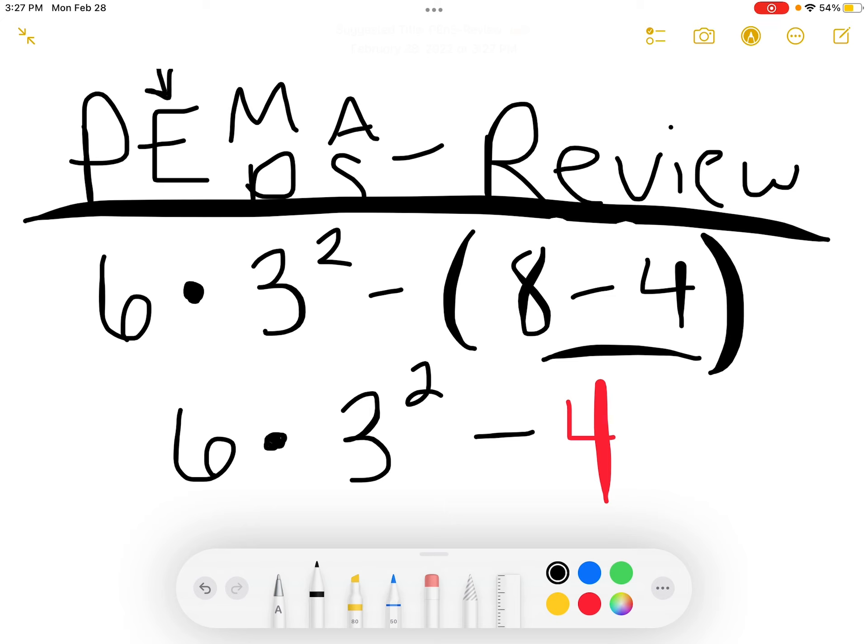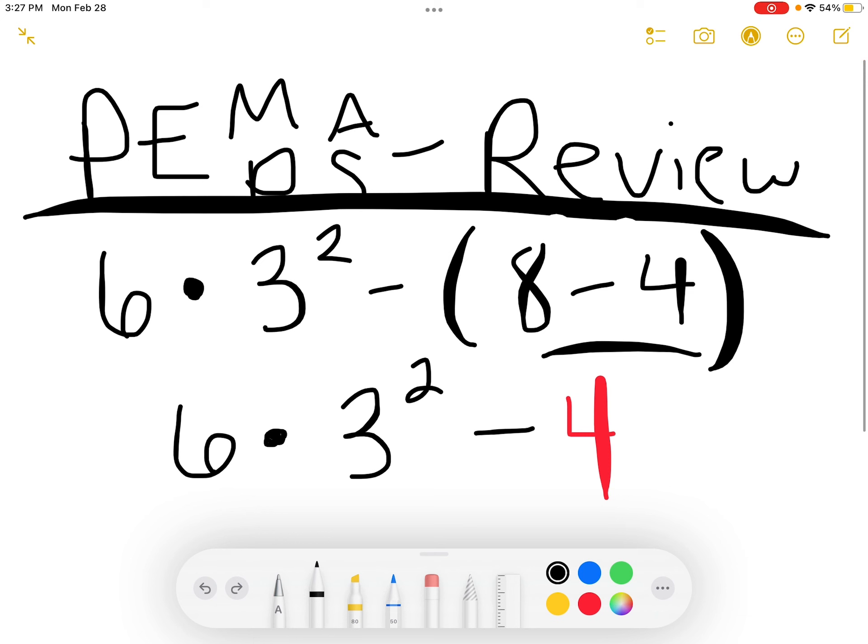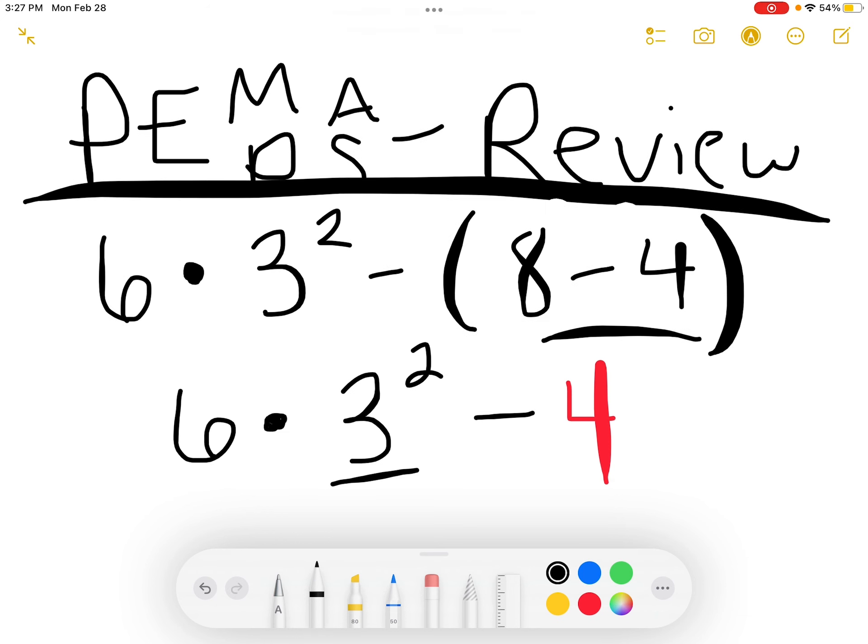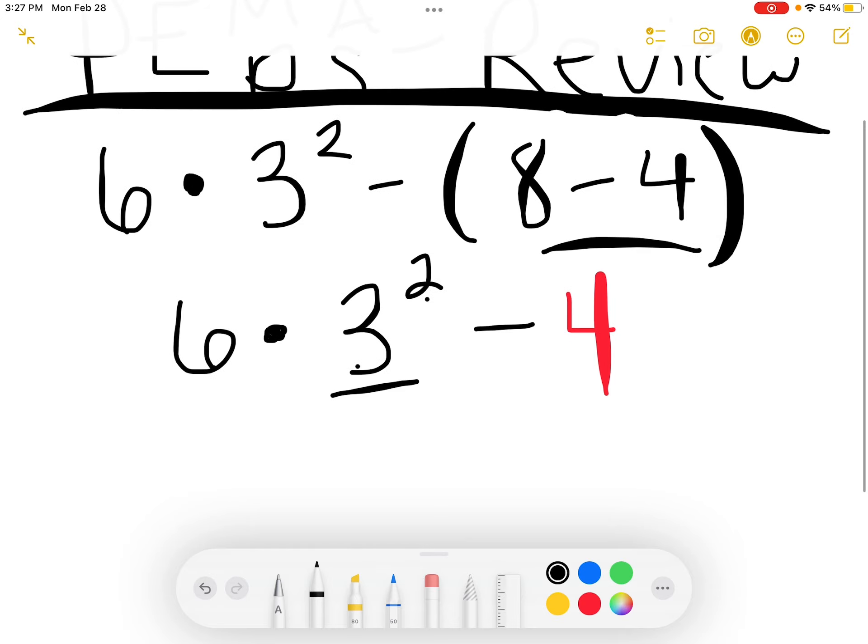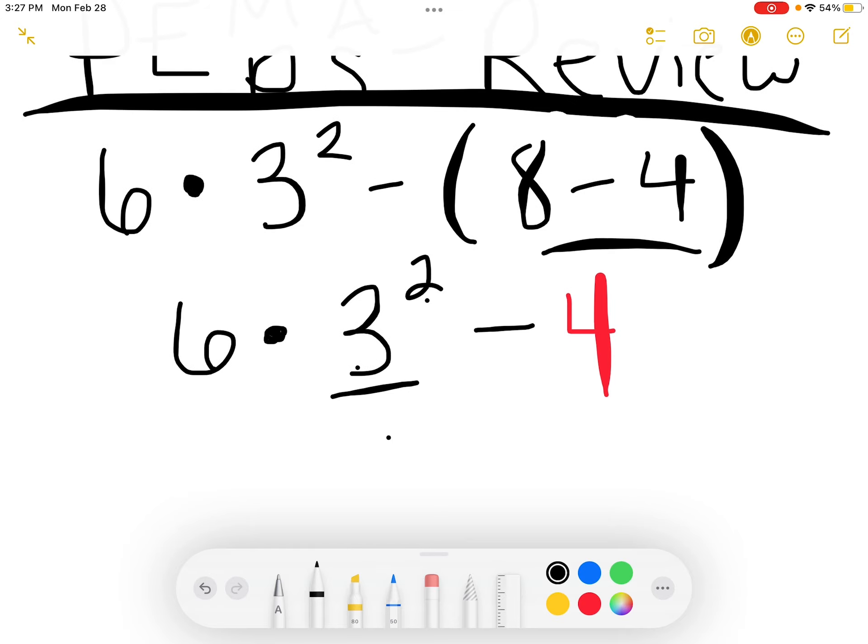After we've taken care of parentheses, next we see our E for exponents. Do we have any exponents in this problem? Yes, our 3 squared. A reminder that this means 3 being multiplied by itself 2 times, so that's 3 times 3. 3 times 3 would give us 9. We replace that 3 squared with a 9 and drop down the rest of our problem.